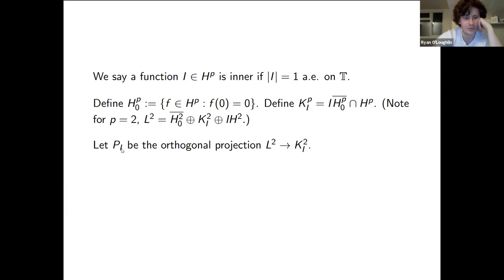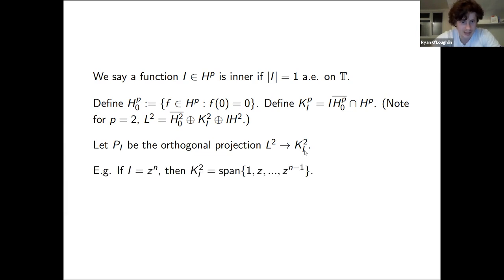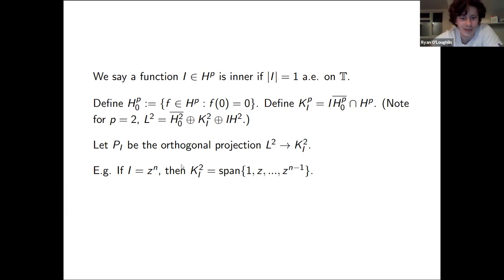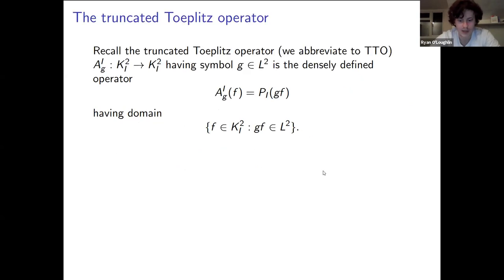The model space is defined as the complex conjugate of H^p_0 multiplied by I, where this multiplication is understood on the circle, intersected with H^p. I'll let P_I be the orthogonal projection from L^2 to the model space corresponding to inner function I. The nicest example of a model space is when the inner function I is just z^n, and then your model space is just the span of all powers of z up to and including z^{n-1}.